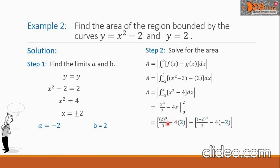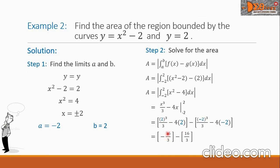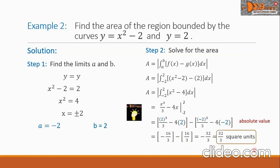Evaluating further, we have 2 cubed over 3 minus 4 times 2, minus the second group: negative 2 quantity raised to 3 all over 3, minus 4 times negative 2. We will get 16 over 3 for parts of the calculation. Taking the difference, we will have negative 32 over 3. Of course we will take the absolute value, so the final answer is positive 32 over 3 square units. This is the final answer.